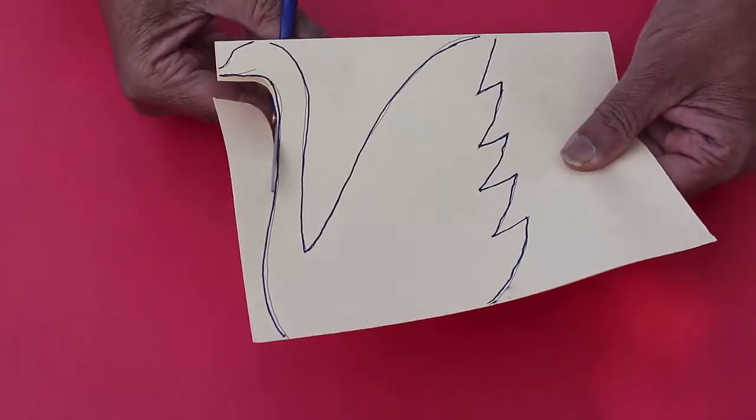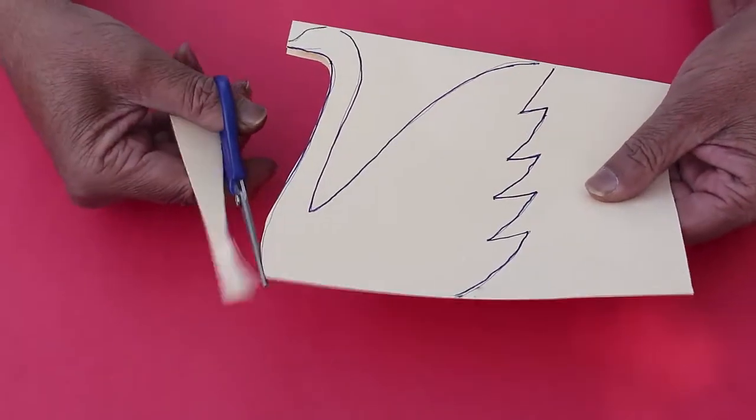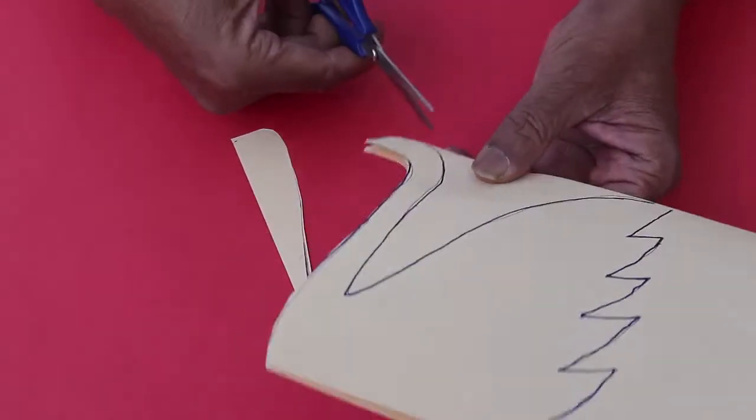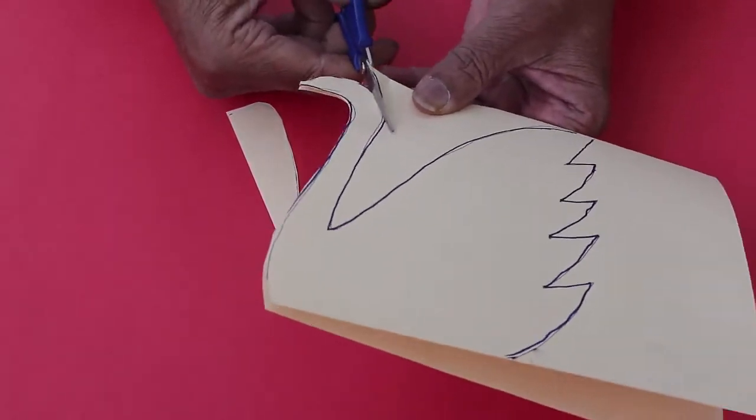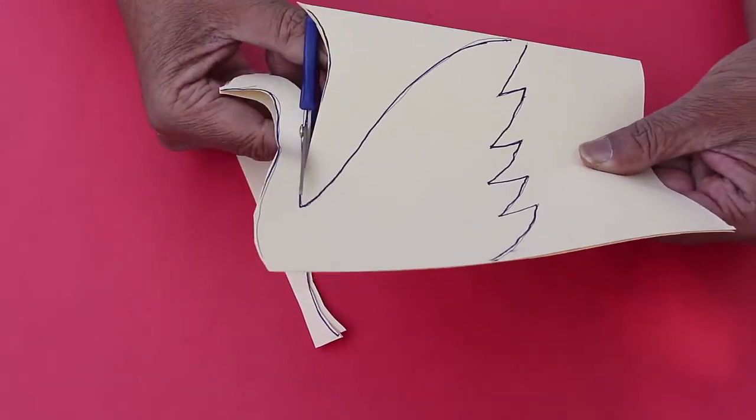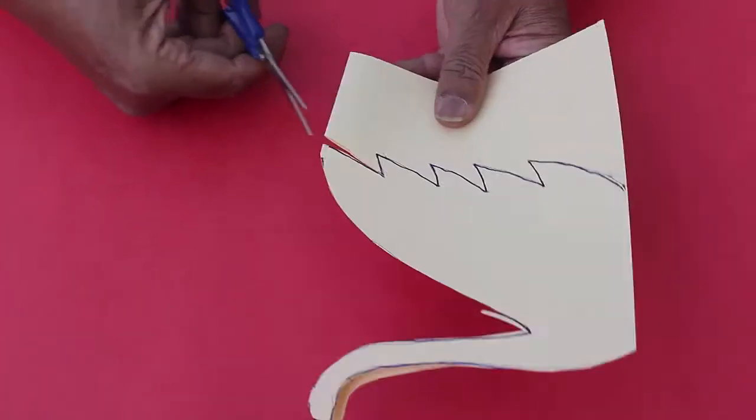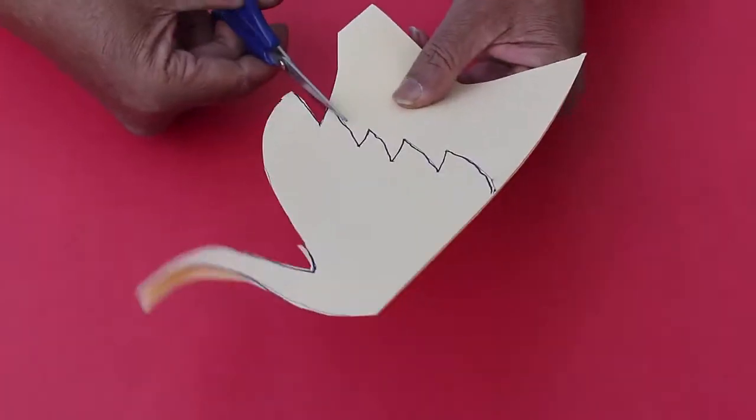Then cut the swan along the outline. Leave the top of the head uncut. This way both layers of the swan will be together and they will be aligned.